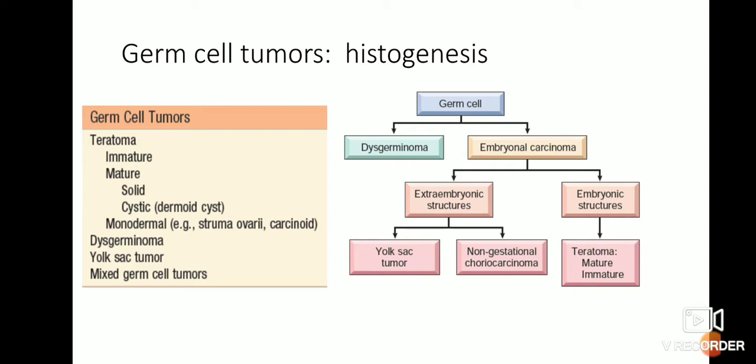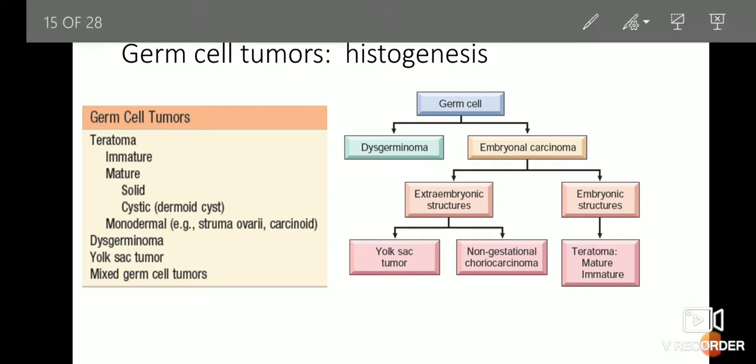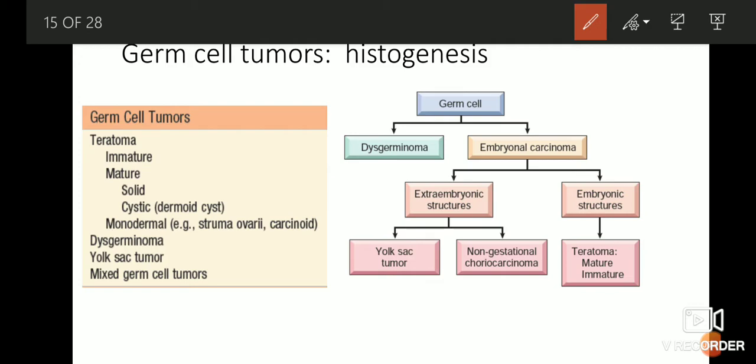The germ cell may refer to the ovum, and in testes the germ cells are the spermatogonia. But here we are talking about the germ cells of the ovary. This classification of the germ cells of the ovary consists of the teratomas, dysgerminomas, yolk sac tumor, and mixed germ cell tumors. Mixed germ cell tumor refers to when there is more than one type of germ cell tumor in the same ovary.